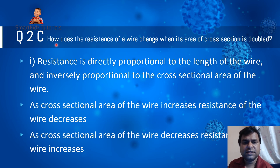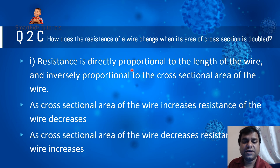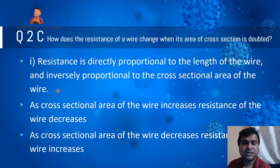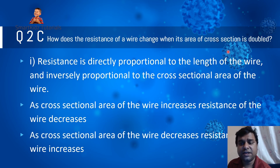The second part of Question 2C (choice): how does the resistance of a wire change when its area of cross-section is doubled? Resistance is inversely proportional to the cross-sectional area of the wire. If the cross-sectional area increases, resistance decreases; if it decreases, resistance increases. Therefore, if the area of cross-section is doubled, the resistance will become half of what it currently is.